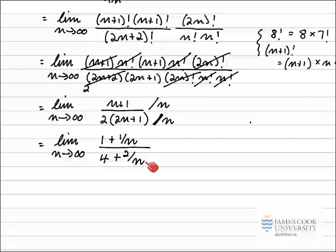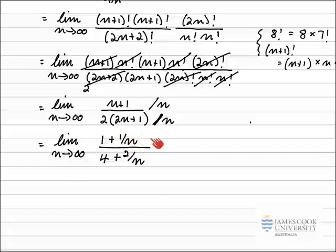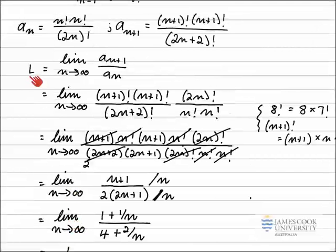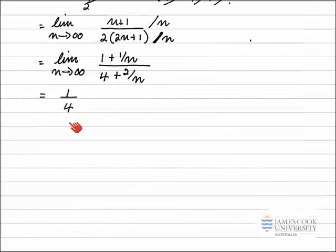This simplifies things a lot. As n approaches infinity, 1/n approaches 0 and 2/n also approaches 0. So as n gets very large, the fraction 1/n tends towards 0 and 2/n tends towards 0. So the limit gives 1 on the top and 4 on the bottom, meaning L equals 1/4.